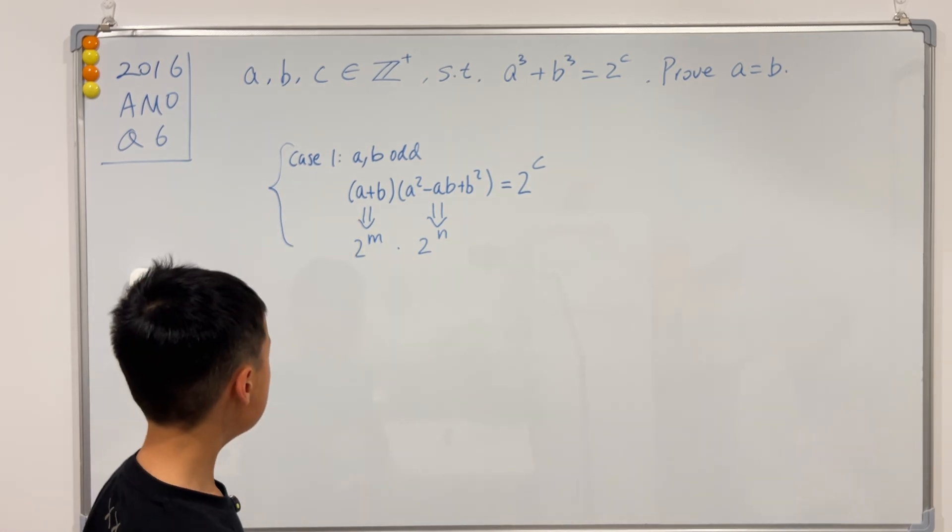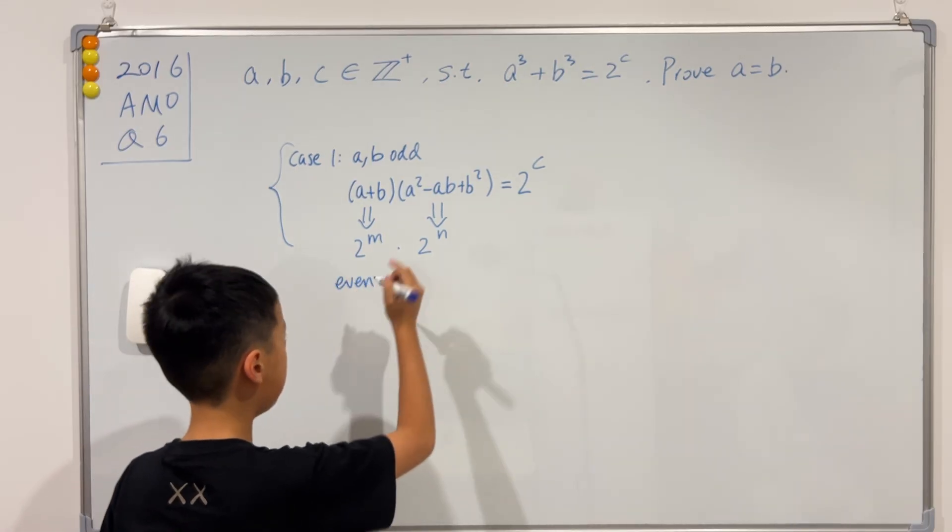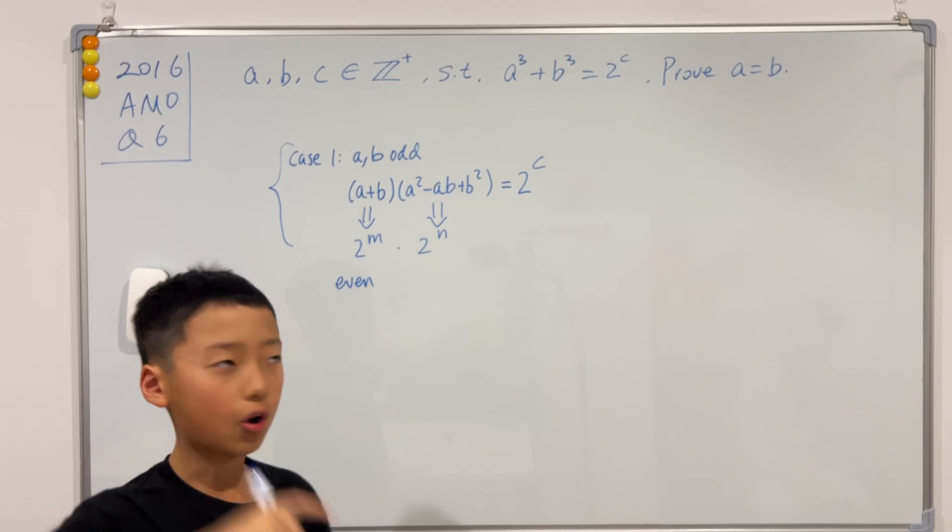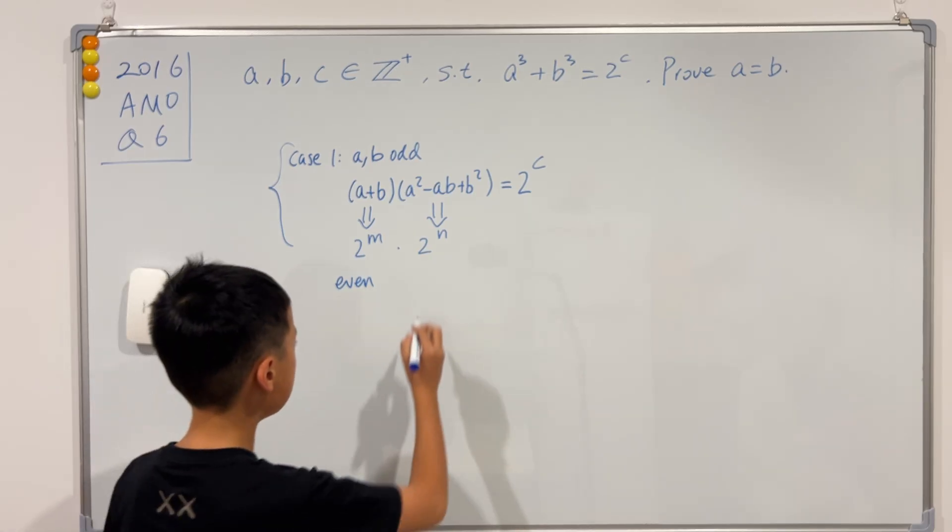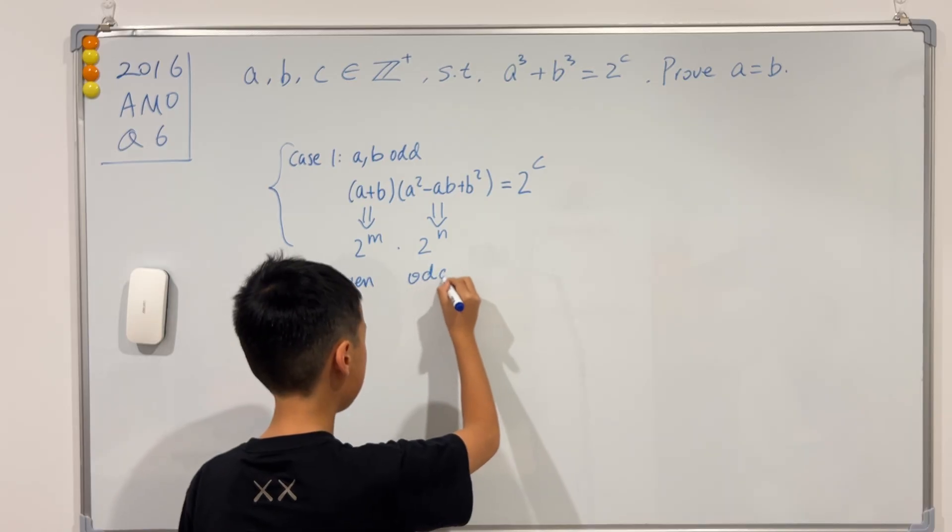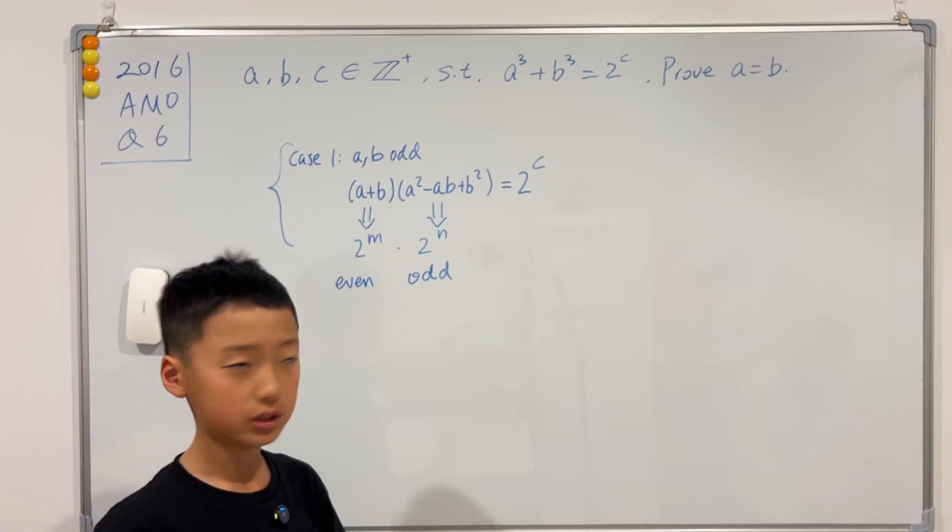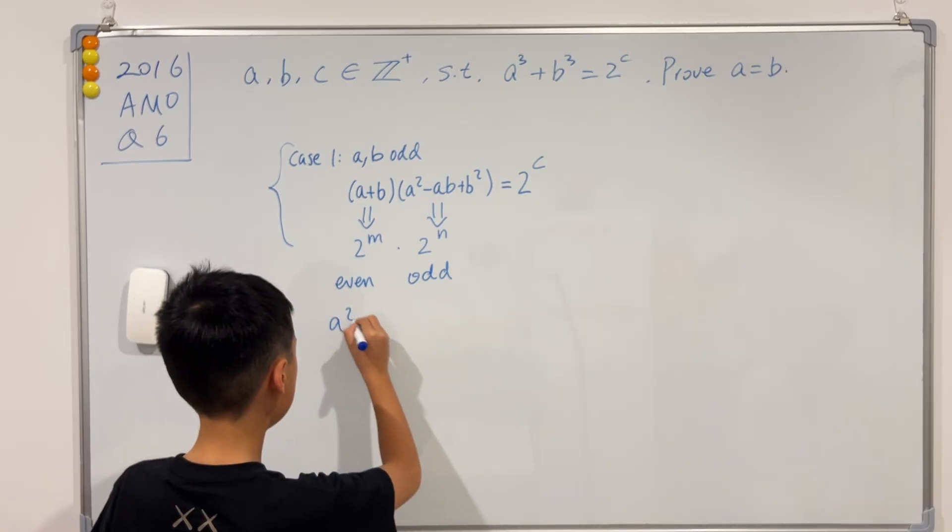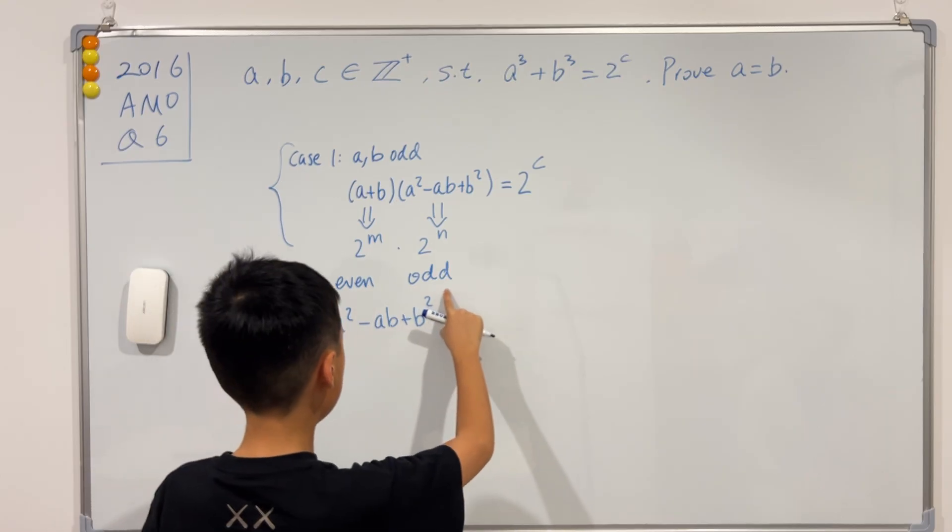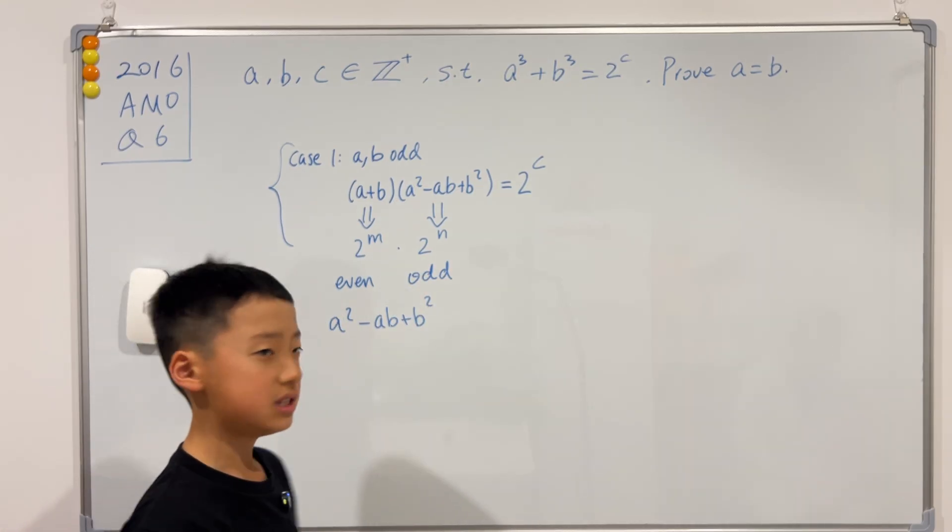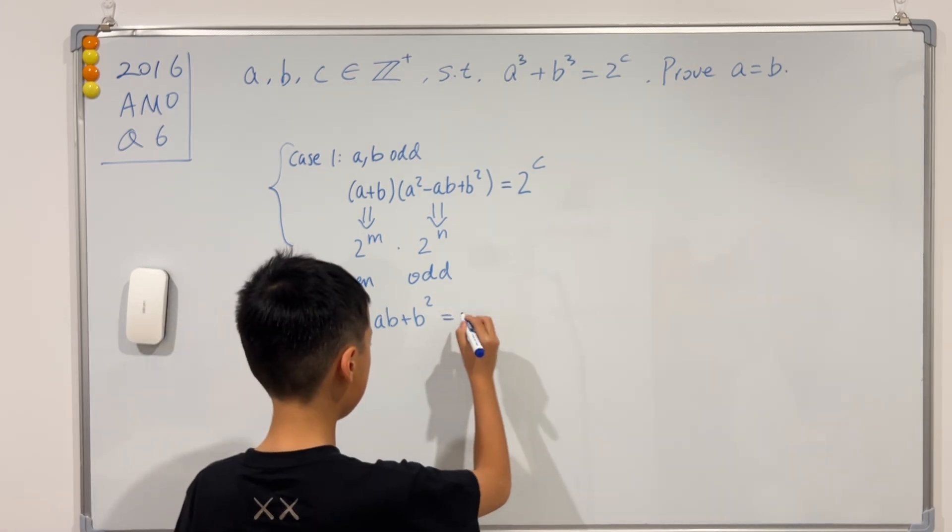If a and b are both odd, then a plus b is even. But in this case, it's odd, odd and odd. But that, when added up, will be odd. So how can an odd equal an even? Well, there is one case. The only case where an odd equals 2 to the power of n is if n is equal to 0. And in that case, the right hand side would be 1.